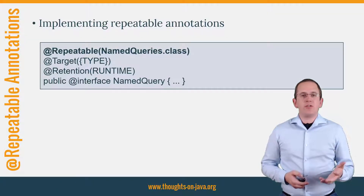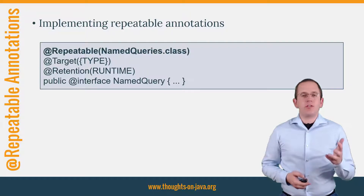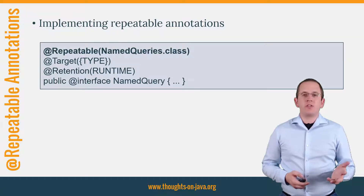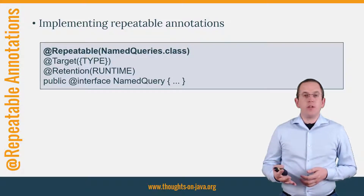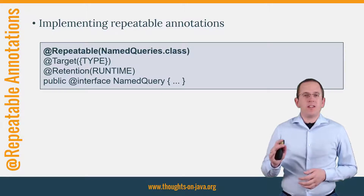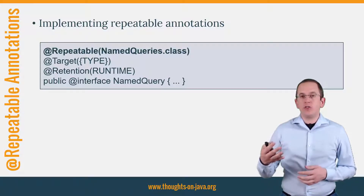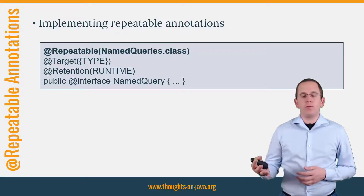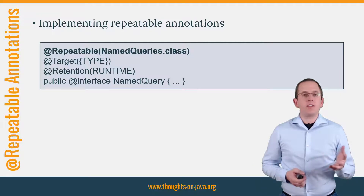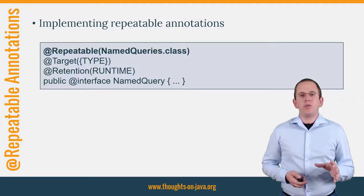The implementation of a repeatable annotation is pretty simple, as you can see in the code snippet. It shows JPA's Named Query annotation, which became repeatable in version 2.2. The only change compared to JPA 2.1 is the additional @Repeatable annotation. It declares the container annotation which the Java compiler will use to generate the code that stores the repeating annotations — in this case, the well-known Named Queries annotation.